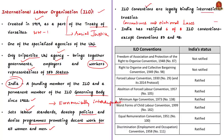The ILO governing body has identified eight fundamental conventions covering fundamental principles and rights at the workplace. These include freedom of association and the right to collective bargaining, elimination of all forms of forced or compulsory labor, effective abolition of child labor, and elimination of discrimination in employment and occupation. There are eight fundamental conventions of the ILO, and India has ratified six out of eight. India has not ratified the Freedom of Association and Protection of the Right to Organize Convention 1948, and the Right to Organize and Collective Bargaining Convention 1949.